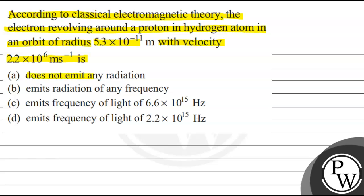Option A: does not emit any radiation. Option B: emits radiation of any frequency. Option C: emits frequency of light of 6.6 × 10¹⁵ hertz. Option D: emits frequency of light of 2.2 × 10¹⁵ hertz.